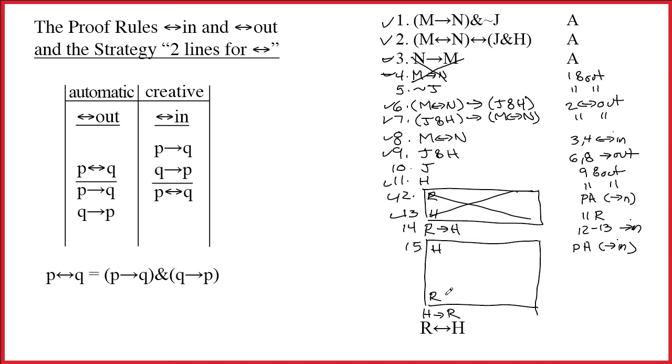Well, we have a single letter by itself. The bottom-up strategy for a single letter is to do tilde out. So we'll make another box above this. It will have tilde R at the top. And we'll be looking for a contradiction. Ah, yes. Finally, now we need a contradiction. Line 16 is a PA for tilde out.